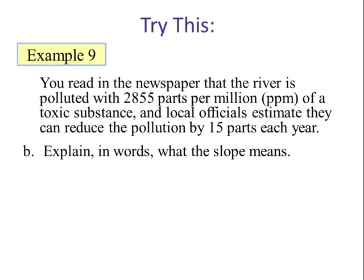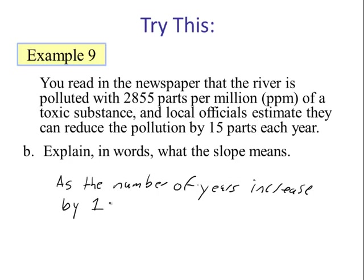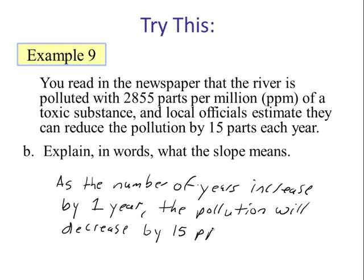Now if we explain slope in words, we would say: As the number of years increases by one year, the pollution in the river will decrease by 15 parts per million. That's the units for P.